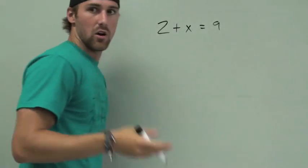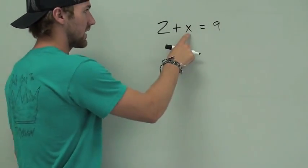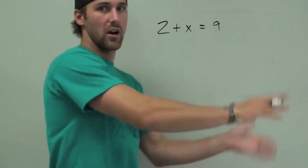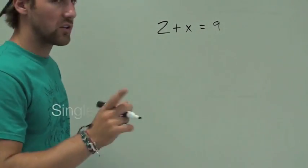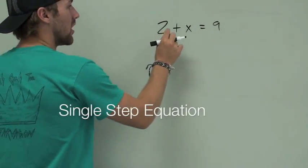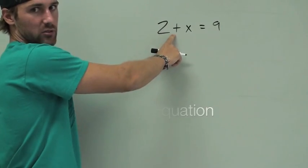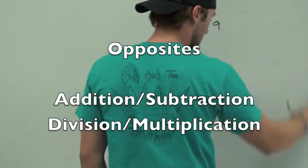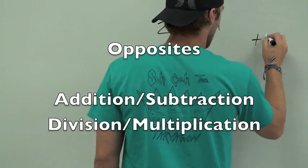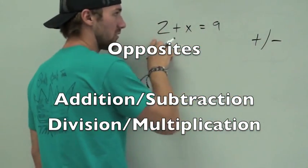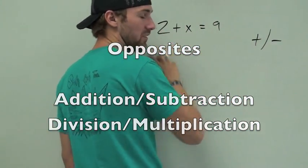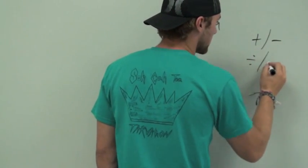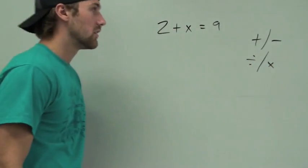Your goal here is to get x by itself. So you try to get all the other numbers on the other side of the equal sign. To do that, you do the opposite of whatever is happening between those numbers. The opposite of addition is subtraction. The opposite of multiplication is division. So whenever you want to get something that's added, you subtract it. Whenever you want to divide, multiply — same idea.